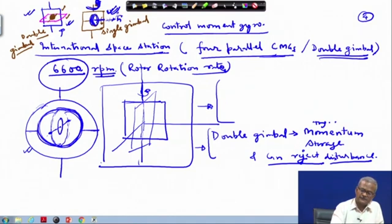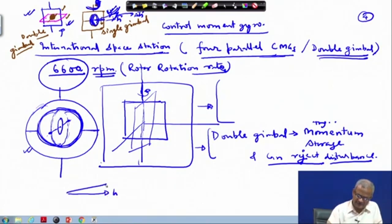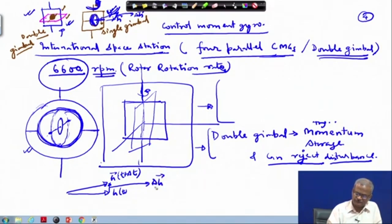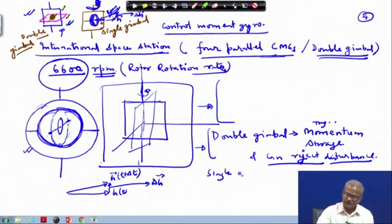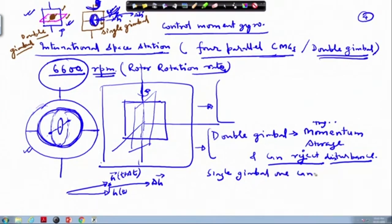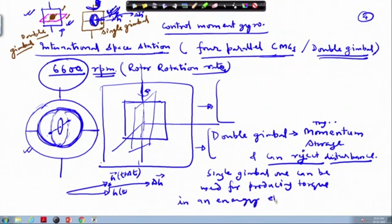If you are rotating in this direction, this will be the change in the angular momentum vector from this place to this place. This is your delta h — h goes to another h; the speed is not changing, only the direction has changed. This change is shown as delta h. So the single gimbal CMG can be used for producing torque in an energy efficient way.